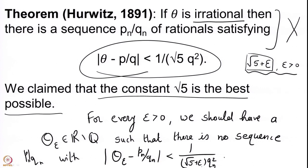Let us again understand what we need to prove. We claim that √5 is the best possible constant. If we increase √5 slightly by any positive ε, we are looking at the new constant 1/(√5 + ε). We claim that Hurwitz's theorem does not hold for √5 + ε.